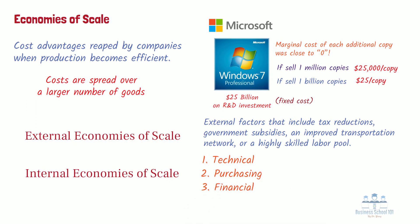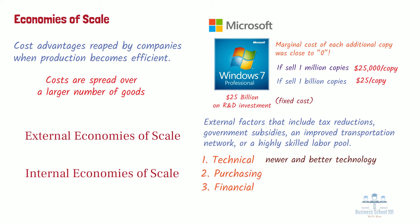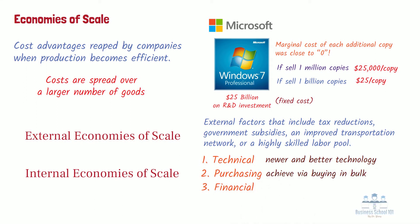First, technical economies of scale are economies of scale achieved via technology. Larger businesses more readily have the capital to invest in newer and better technology, which can bring them cost advantages smaller businesses are otherwise unable to achieve. Second, purchasing economies of scale, also called buying economies of scale, are economies of scale achieved via buying in bulk. Larger businesses more readily have the cash and output to warrant buying materials in much larger quantities, which can bring them per-unit cost advantages smaller businesses are otherwise unable to achieve.